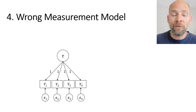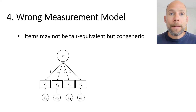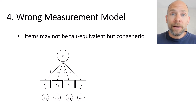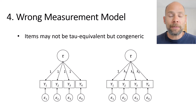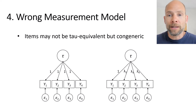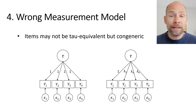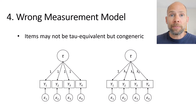Number four is related to number three: an incorrect measurement model. A tau equivalence model requires not only a single factor but also that all factor loadings are equal — fixed to one. This is not always the case. Sometimes measures measure a single factor but with differing loadings — called a congeneric measurement model — where lambda two, three, and four may all differ from one. When measures have different unstandardized factor loadings, Cronbach's alpha underestimates the reliability of the sum, and you should use a different coefficient such as McDonald's omega, which is appropriate for congeneric measures.